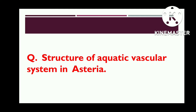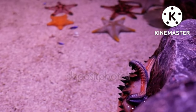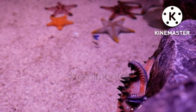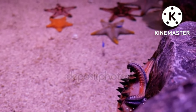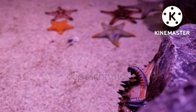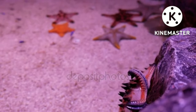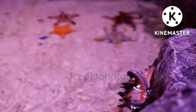Hello friends, today we are going to discuss the structure of the aquatic vascular system in Asterias, that is starfish. The points below show eight different structures of the vascular system in Asterias: madreporite, stone canal, ring canal, Polian vesicle.